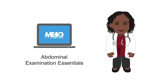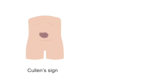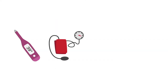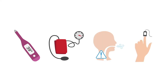Please see the MedMastery course Abdominal Examination Essentials for more details on peritoneal signs in the abdominal exam. In about 3% of patients with acute pancreatitis, bruising or discoloration may be observed in the periumbilical region, called Cullen sign, or along the flank, called Gray-Turner sign, which can indicate retroperitoneal bleeding. Patients with severe acute pancreatitis may present with major alterations in their vital signs, particularly with fever, hypertension, tachypnea, and hypoxemia.